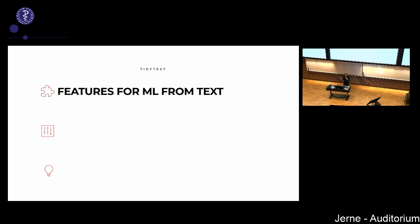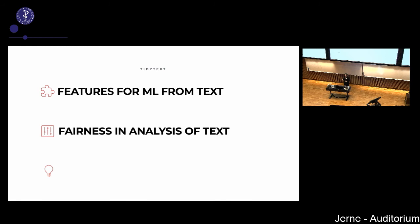I'm really excited about digging deeper into how these feature engineering choices impact the model you end up with. The next area is fairness and algorithmic bias in text analysis. Almost any large text dataset has latent within it systemic historical biases from society. When we train models on those datasets, those biases get built into the models. We need to understand this and know how it will impact our outcomes.